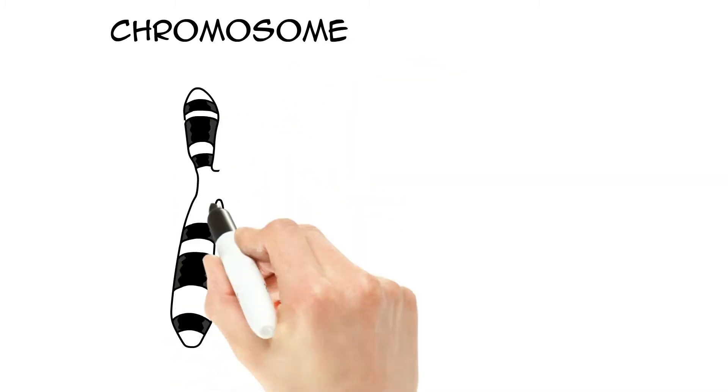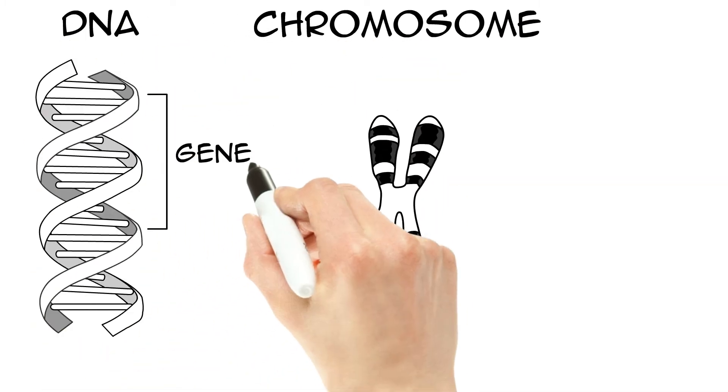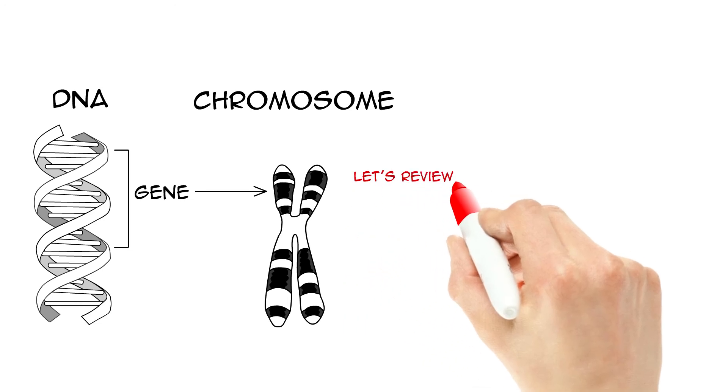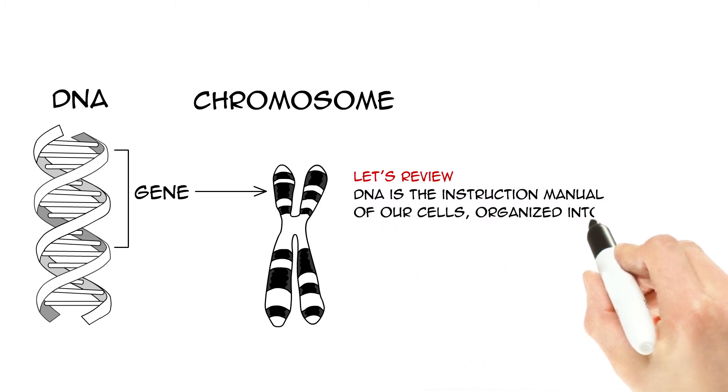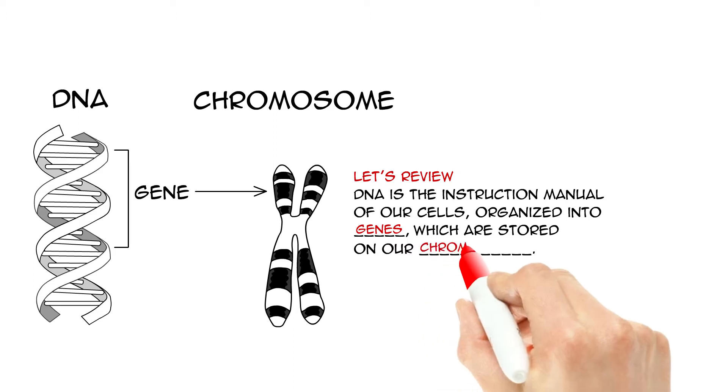Chromosomes are made up of long strings of instructions, which we call genes. Each gene is responsible for some function in our body. Let's summarize what we've learned. DNA is the instruction manual of our cells, organized into genes, which are stored on our chromosomes.